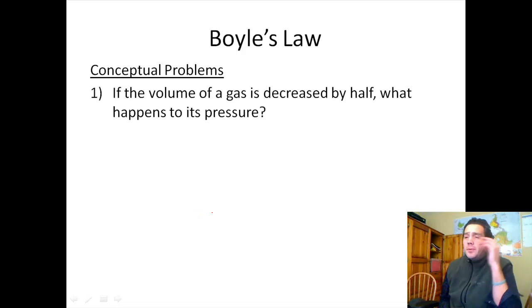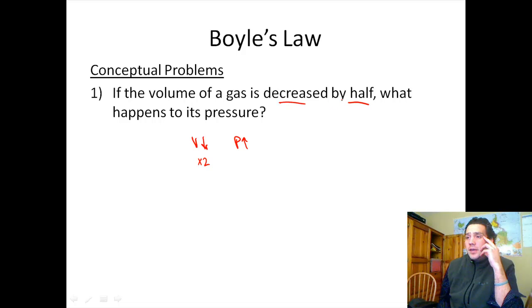So let's go over a couple of conceptual problems. Remember that volume and pressure are inversely proportional. If we decrease the volume in this one, we're decreasing the volume, that means the pressure has to go up. If we decrease the volume by a factor of two—because we cut it in half—we basically multiplied it by one-half. That's a factor of two. Then we know that the pressure has to go up by a factor of two. So what happens to the pressure? We're going to multiply the pressure times two.